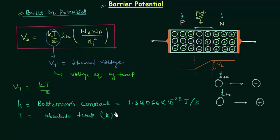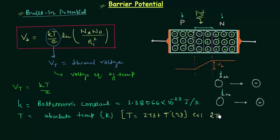If you have temperature in degree Celsius and want the absolute temperature, you add 273 to it to get temperature in Kelvin. For example, if temperature is 27°C, then absolute temperature T = 273 + 27 = 300 Kelvin.